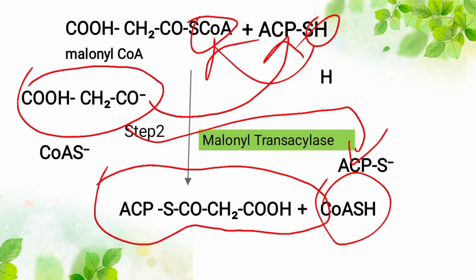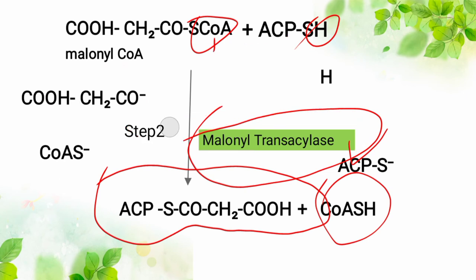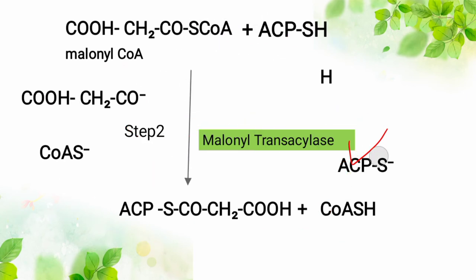You can't call malonyl-ACP an acyl group because there is still a carboxylic group present — the OH has not been removed, so the whole H must be gone for it to be acyl. It's a malonyl group. The enzyme that catalyzes this step is malonyl transylase. It's a very simple step.